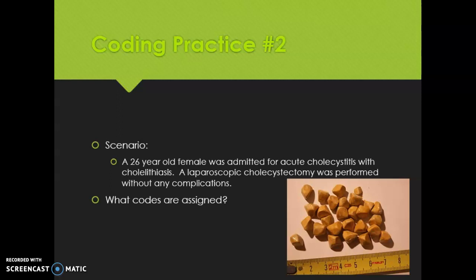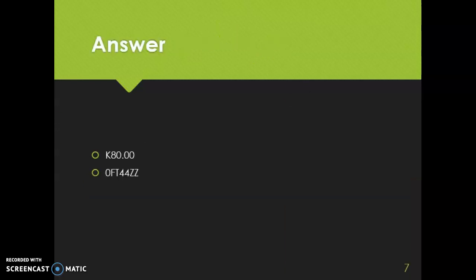Now for the procedure — the laparoscopic cholecystectomy. In the inpatient setting, we code this with an ICD-10-PCS procedure code. The root operation is resection, as they are taking out the entire gallbladder. Looking up resection gallbladder gives us characters 0FT4. Flip to table 0FT row 4. The fifth character is 4 for percutaneous endoscopic, since the procedure was done via laparoscopy. The sixth and seventh characters are both Z. So the correct codes are K80.00 and 0FT44ZZ.